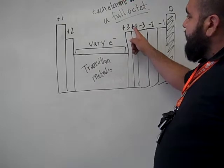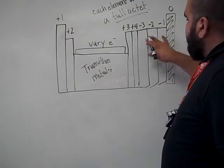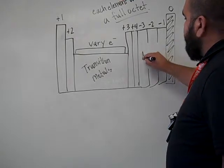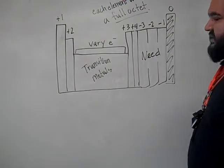These guys give off 2 valence electrons. These guys give off 3. These guys give off 4. But then here, these guys all start to change. These guys need this many valence electrons.